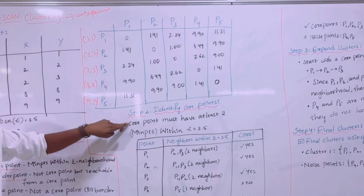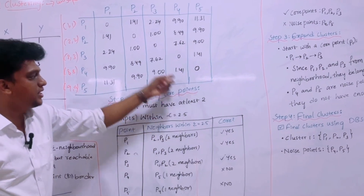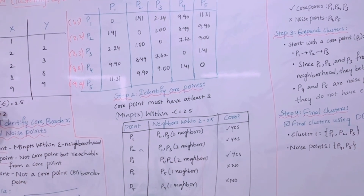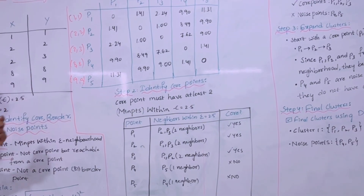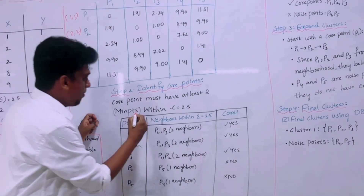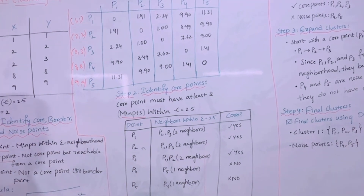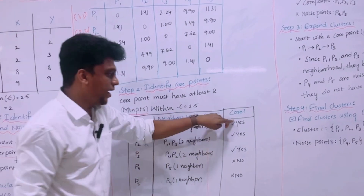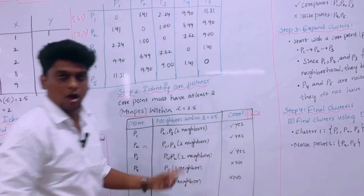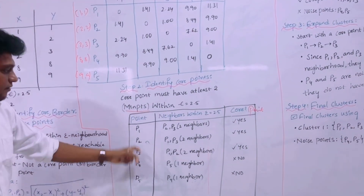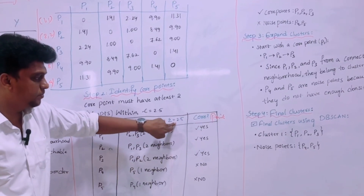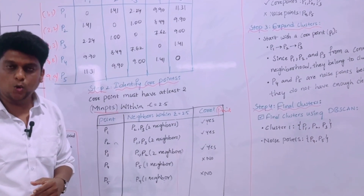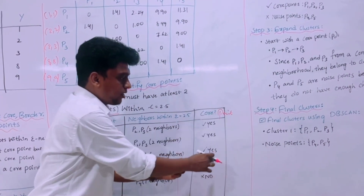After completing the distance table, we move to Step 2: identifying core points. A core point must have at least the minimum number of points — here, 2 — within the given epsilon distance of 2.5. For each point, we look at the table and find all neighbors whose distance is less than 2.5, then determine whether the point qualifies as a core point.